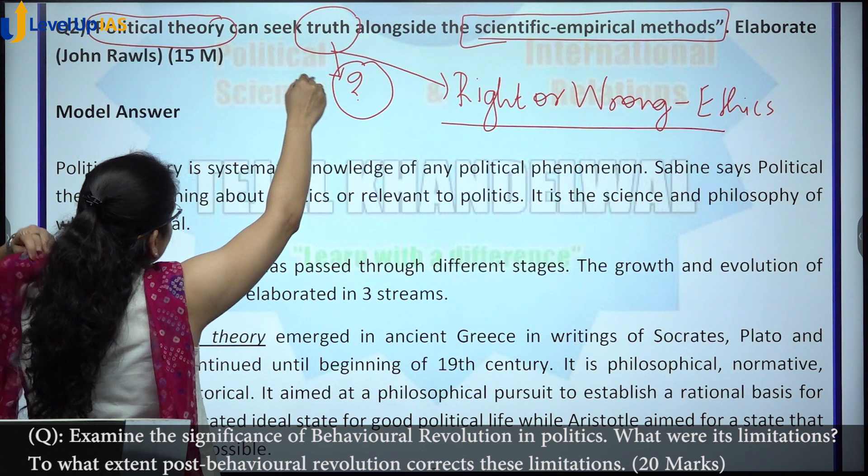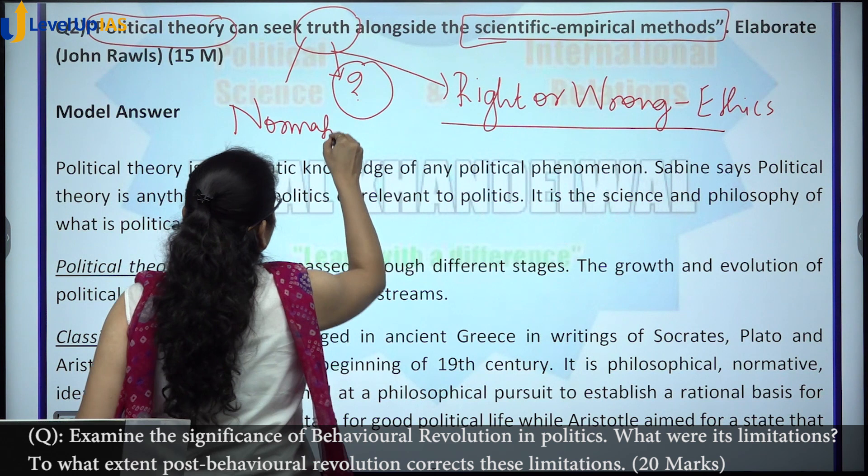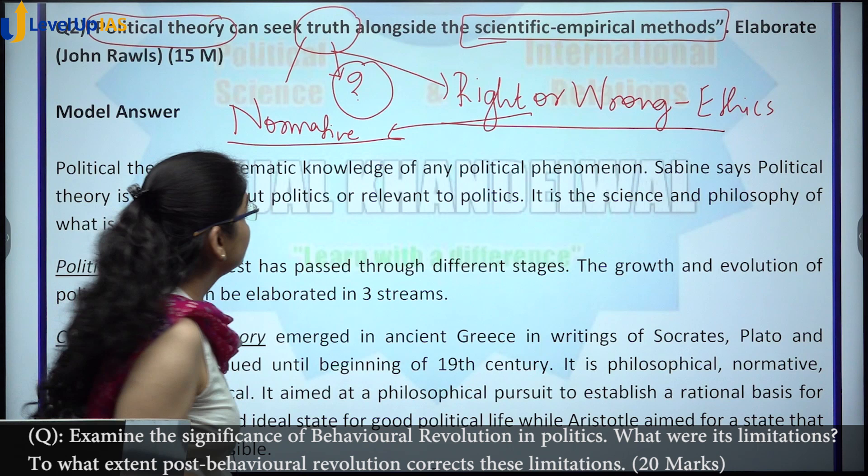Political theory can seek a normative basis because philosophy and ethics are part of normative study — alongside the scientific empirical approach.